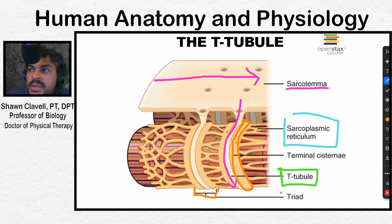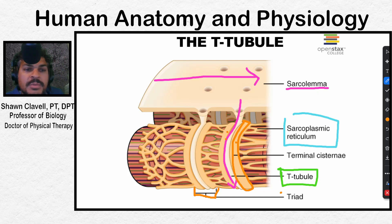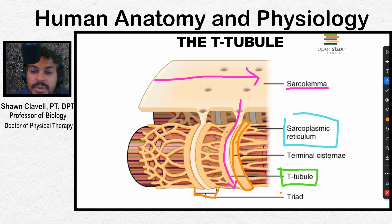Ultimately, the action potential is going to travel across the sarcolemma, travel into the T-tubules, and stimulate the sarcoplasmic reticulum to release calcium. Calcium is the excitation-contraction coupler.